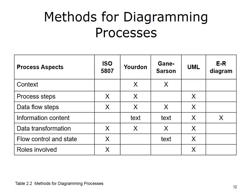Unit 3 covers five notations commonly used to diagram processes: ISO 5807, Yordan, Gain-Sarsen, UML, and ER diagrams. ISO 5807 can be used to represent process steps, their sequence and control, as well as information transformation and roles. Yordan represents context, process steps, and information transformation. Gain-Sarsen represents the latter two process aspects. UML, developed a few decades later and heavily influenced by earlier methods, was designed to represent all but the Yordan-style context diagram. The entity relationship diagram is designed to represent only information content.